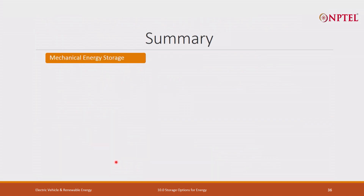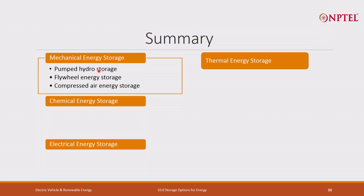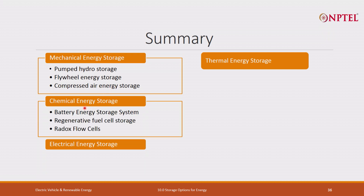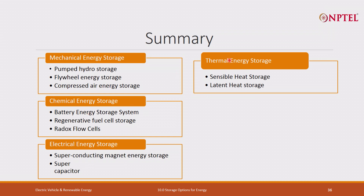With this, Chapter 10 is summarized. We have talked about various types of energy storage: mechanical energy storage, chemical energy storage, electrical energy storage, and thermal energy storage. Specifically we covered pumped hydro storage, flywheel energy storage, and compressed air energy storage for mechanical; battery energy storage, regenerative fuel cells, and redox flow cells for chemical; superconducting magnet energy storage and supercapacitors for electrical; and sensible heat storage and latent heat storage for thermal. All these are options for energy storage, and the energy source should be renewable energy.